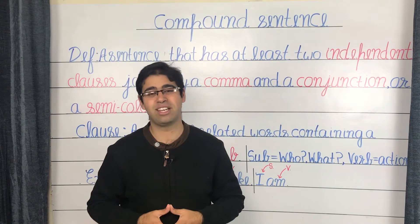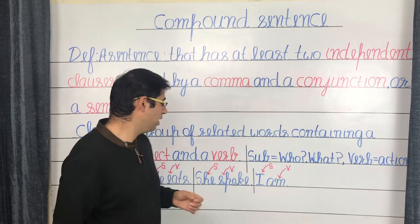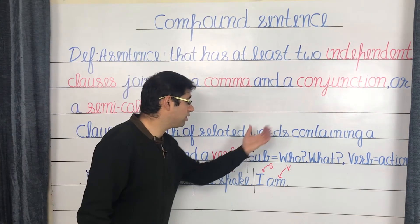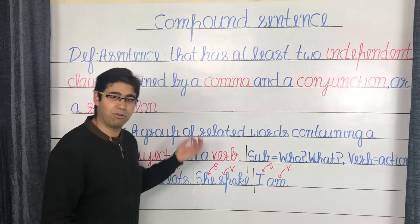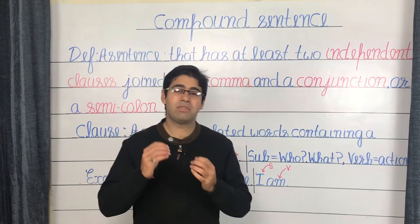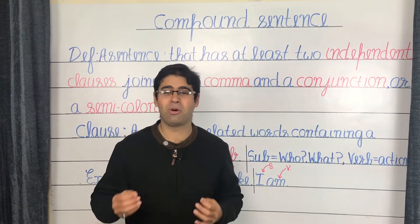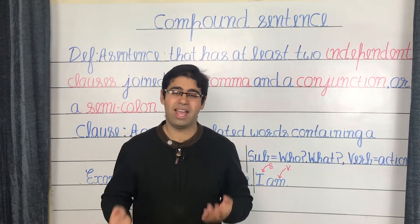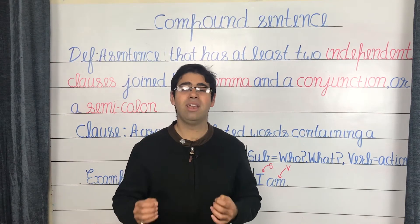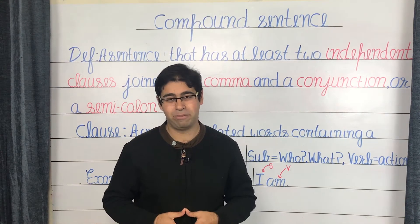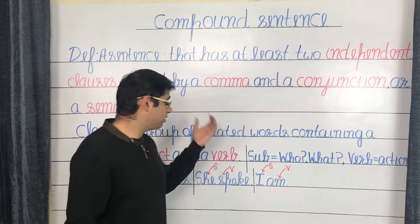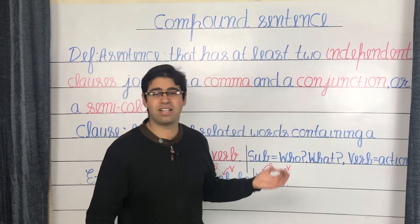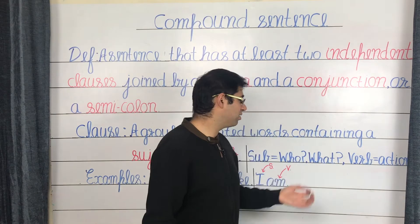A clause is the smallest, simplest sentence that you can write. By definition, a clause is a group of related words containing a subject and a verb. The subject in a sentence is a person or a thing that is either doing something or is being something, and the action being performed by the subject is deemed the verb. In other words, the subject provides the information to the who or the what in a sentence.